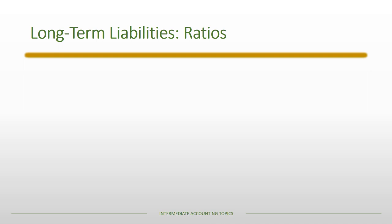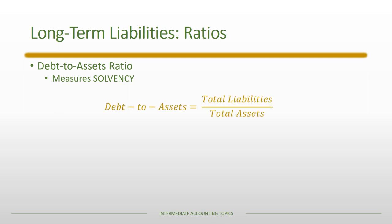There are two ratios to consider when talking about long-term liabilities. First is the debt-to-assets ratio, a measure of solvency — basically a measure of financial risk and a company's ability to meet all of its obligations, both current and non-current. The measure is: total liabilities divided by total assets. The higher the debt-to-asset ratio, the lower the solvency, meaning the firm is less able to meet its long-term obligations as liabilities increase or assets decrease.